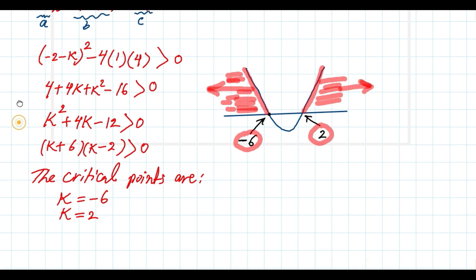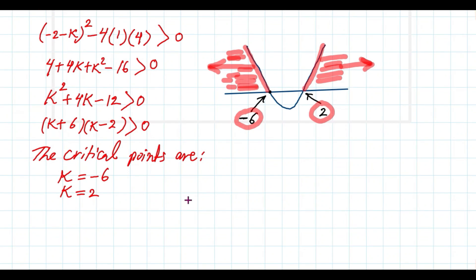Therefore, the solution set can be achieved easily from the graph. So we can say the set of k values is k equals the set of k values that are elements in the real numbers such that k is less than negative 6 or k is more than positive 2.